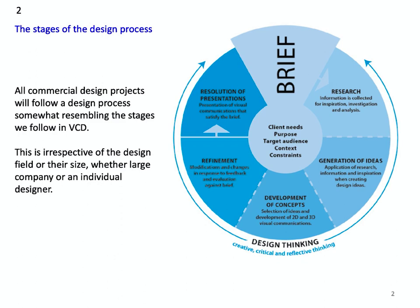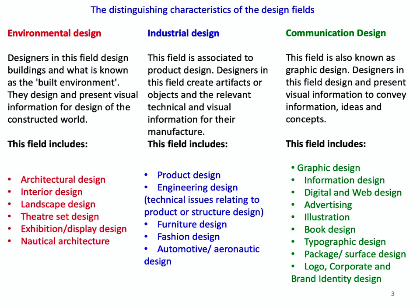But first, we will have a look at what it may look like for a big communication design firm. You need to be able to distinguish between the three design fields and the design practices related to each. Environmental design relates to any area of design concerned with movement about a space, internal or external. Industrial design relates to objects we use and handle, and communication design is primarily concerned with the presentation of visual information.